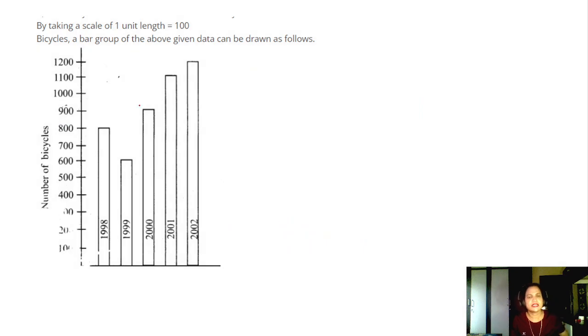The bar graph is like this. Taking the scale of 1 unit equal to 100. So here 100, 200, 300. This is 200, it is 100, like this. And the years on the x-axis, number of bicycles on the y-axis. So in 1998, 800 bicycles are manufactured. And in 1999, 600. In 2000 it is 900. In 2001 it is 1100. In 2002 it is 1200. This is how you draw the bar graph.